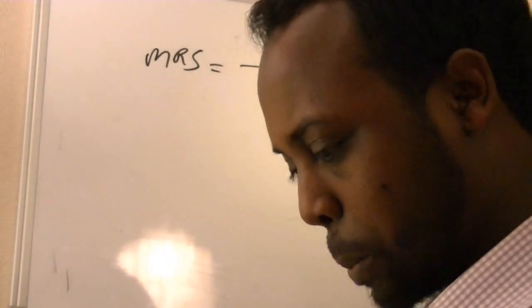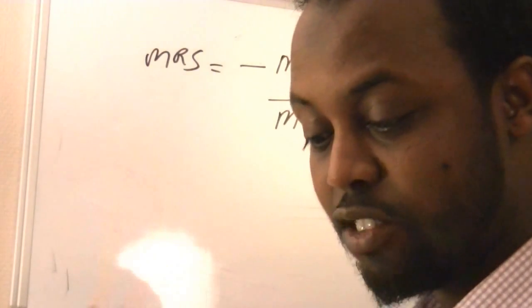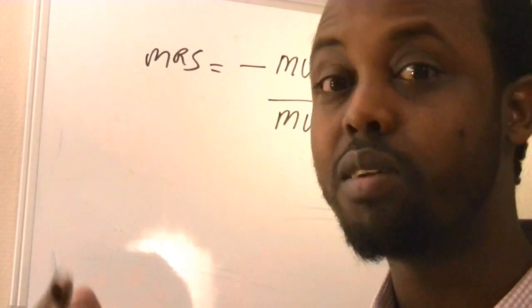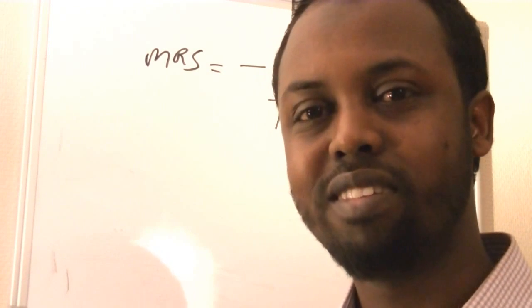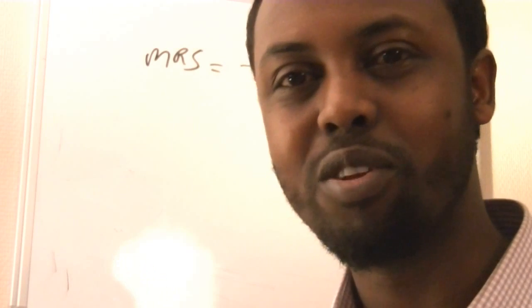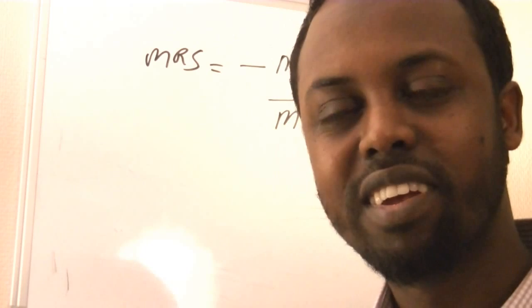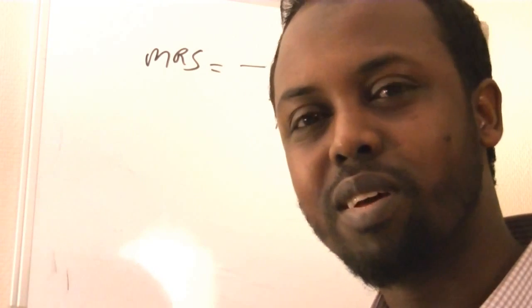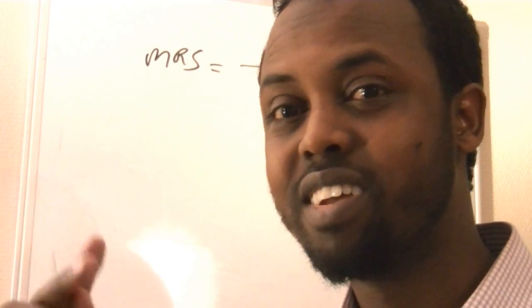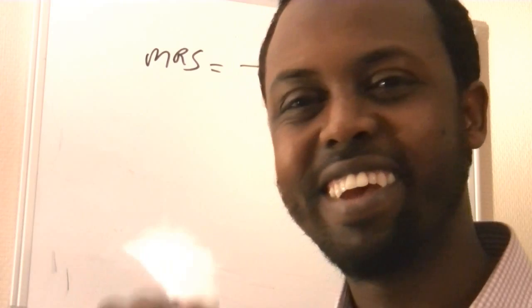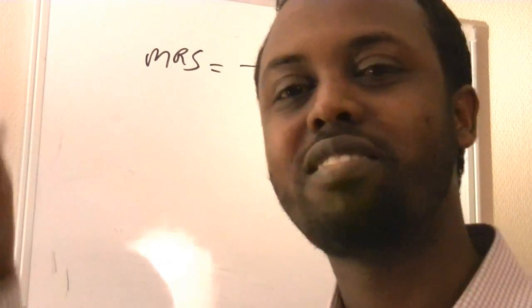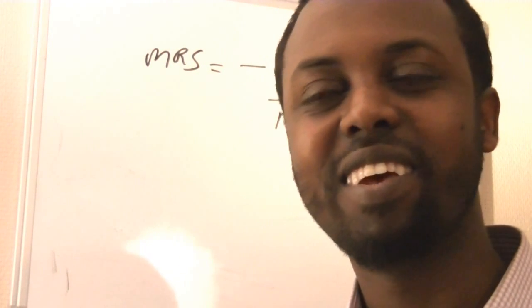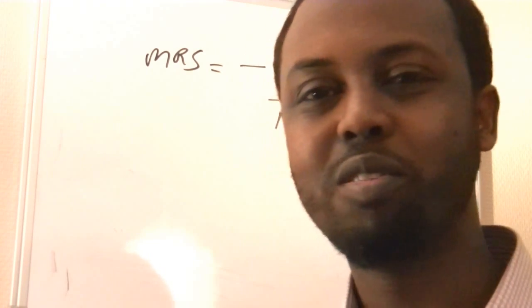The MRS measures the slope of the indifference curve in consumer theory, and in production theory it measures the slope of the isoquants. Remember when we discussed homogeneous functions — isoquants measure the proportion of two inputs that give us the same output. So the concepts are related: indifference curves and isoquants are analogous concepts used in consumer theory and production theory respectively.